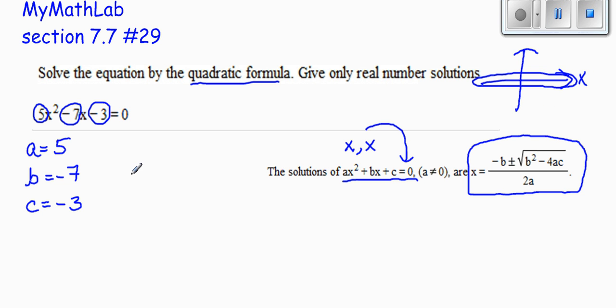So, start plugging that stuff in. This is a plug and chug problem at this point. I start off and I have negative b. I put the negative sign, and it so happens that my b that I'm plugging in is negative 7, so it makes two negative signs right there.